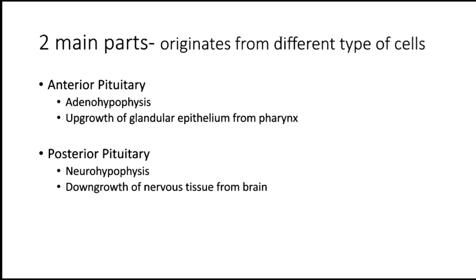The anterior pituitary is also known as the adenohypophysis because it originated from the upgrowth of glandular epithelium from the pharynx. The posterior pituitary is also known as the neurohypophysis because it originates from the downgrowth of nervous tissue from the brain.